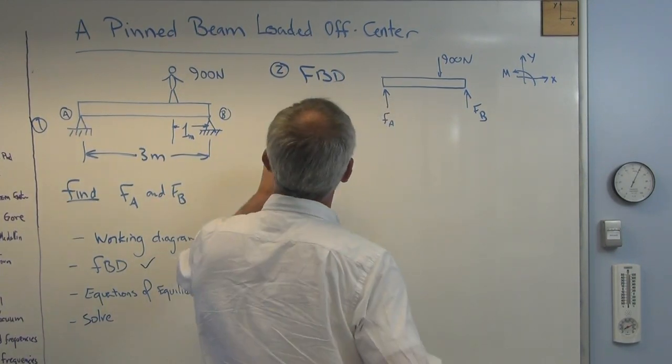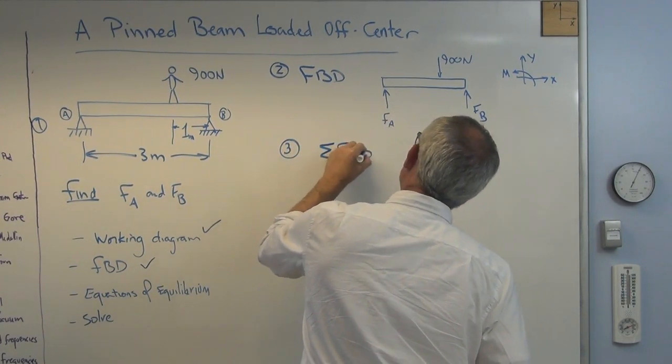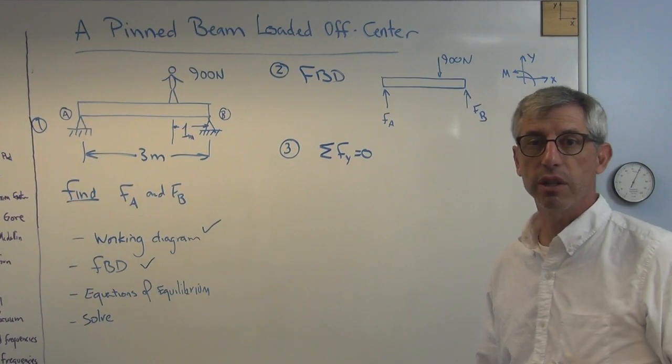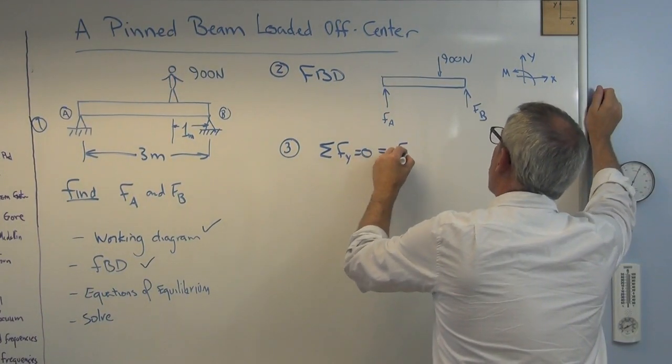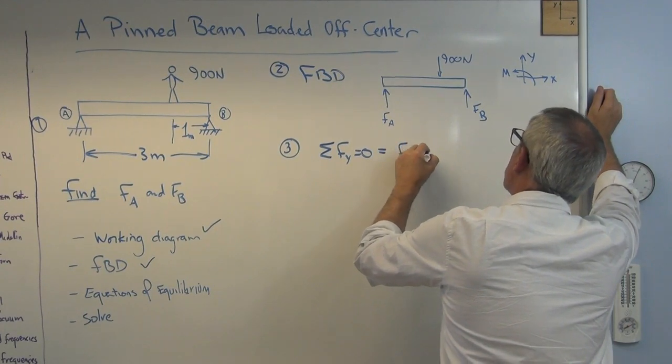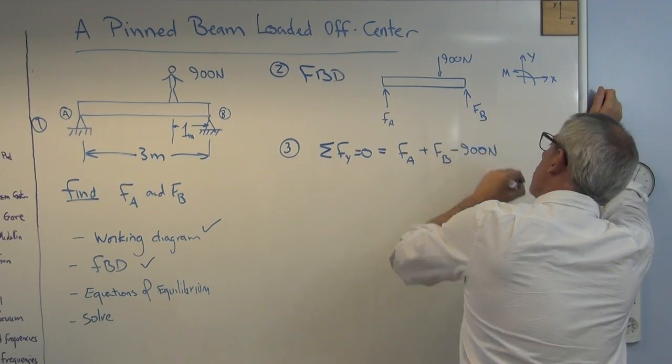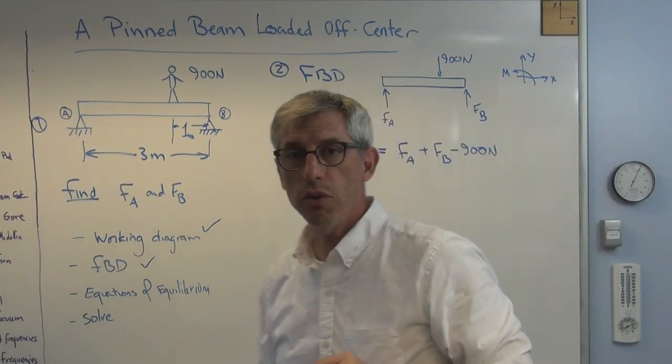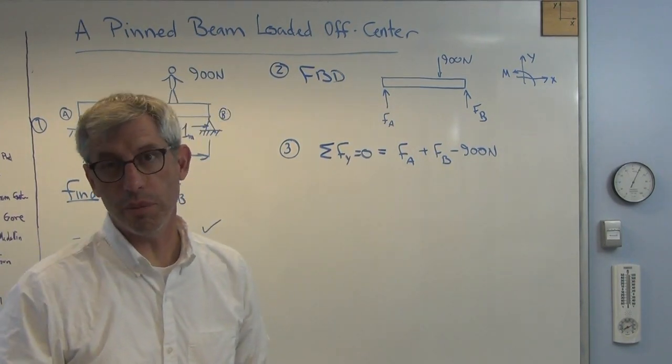So let's say the sum of the forces in the y direction equals zero. We don't have any forces in the x direction, but if we did, we would have another equation here. So let's see, FA is positive plus FB minus 900 newtons, and that's zero.